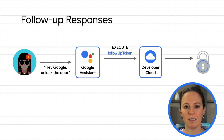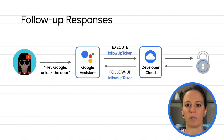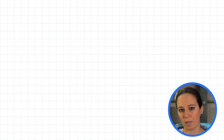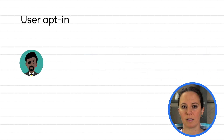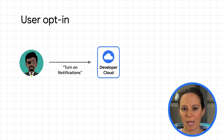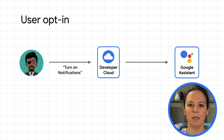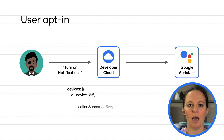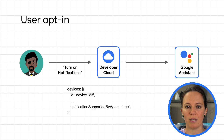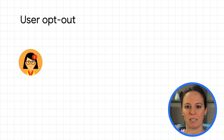The assistant then routes this response to the Google Home device originally queried. For either notifications or follow-up responses, users must be explicitly able to opt-in to these alerts within your Smart Home app. To indicate your user opt-in, update the device definition to indicate notifications are supported, and request a sync intent to update device data.